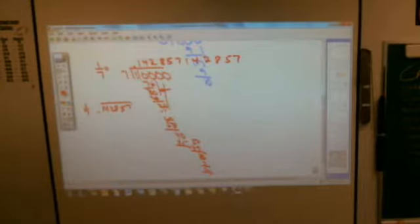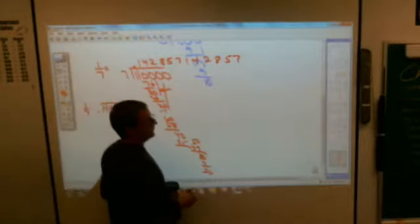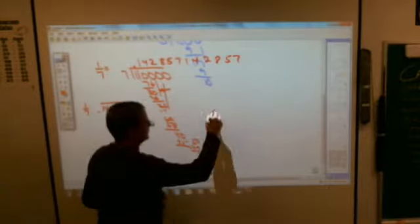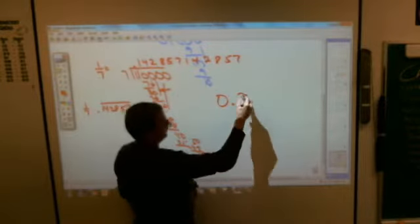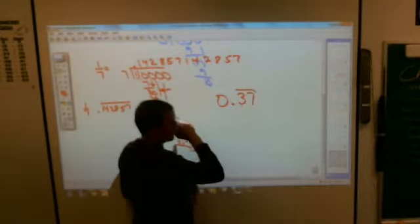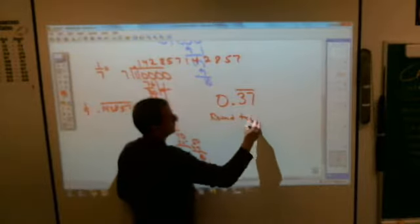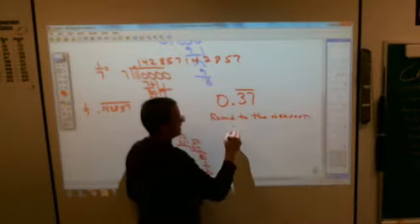Now you ask, what is the book going to ask me to do? Well, they're going to ask you to do this. When you get to a repeater, they're going to ask you to round it to the nearest whatever. For example, they might give you a repeater that looks like this: 0.37 with a line above that, and they'll say round to the nearest thousandth.